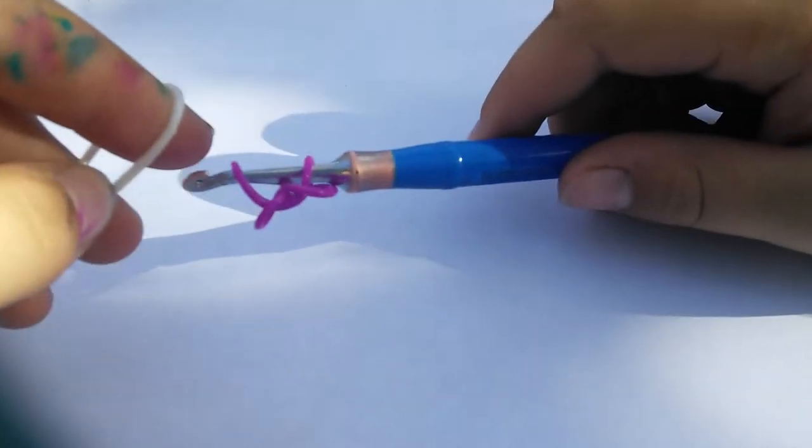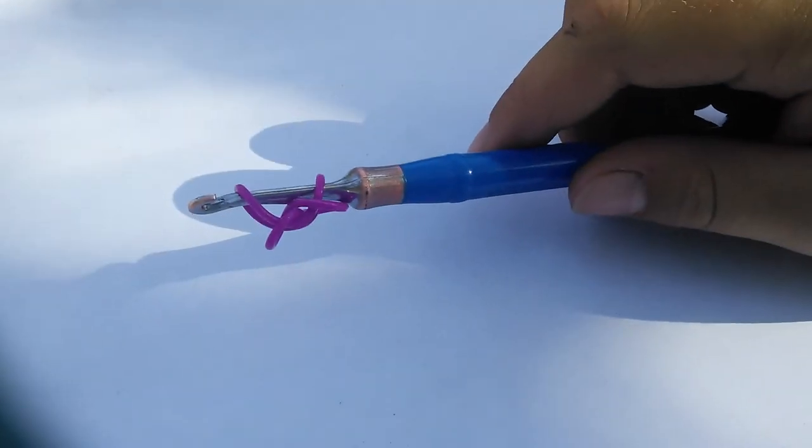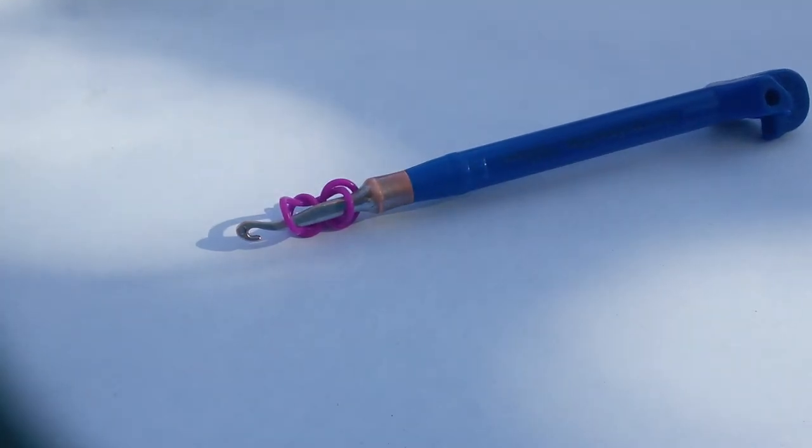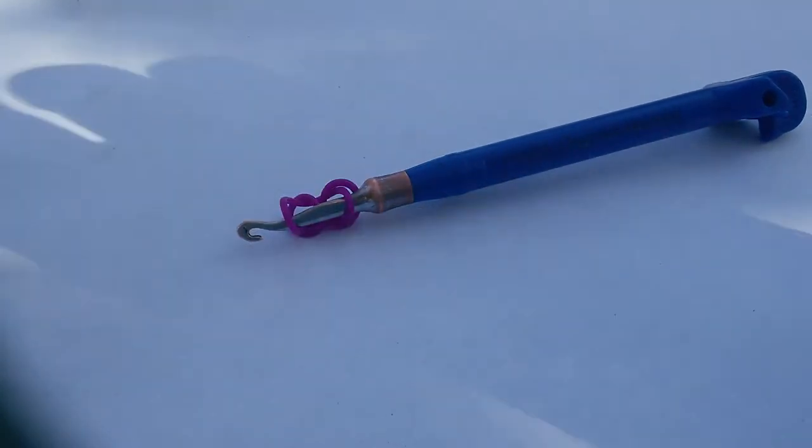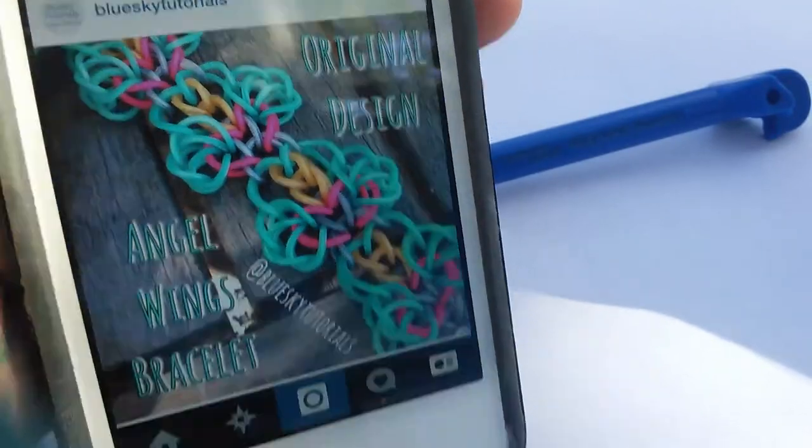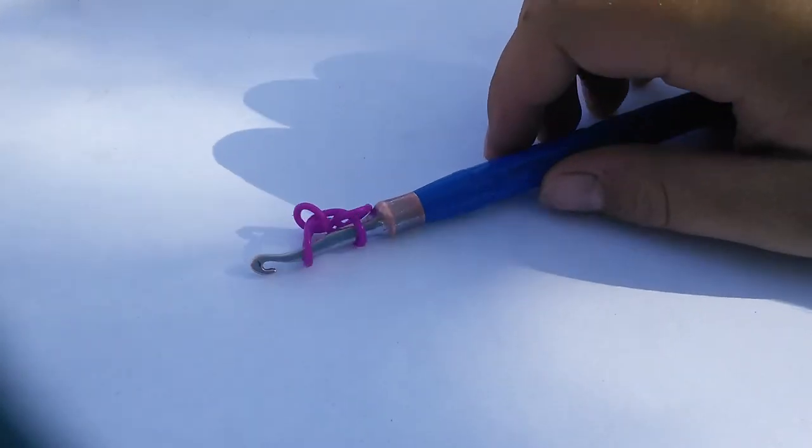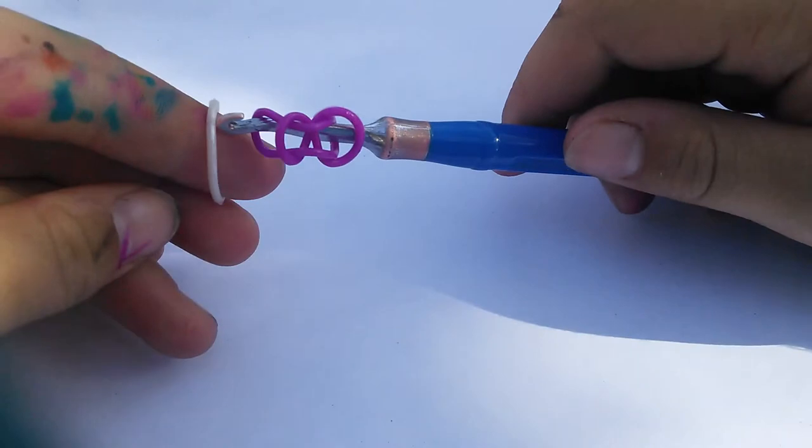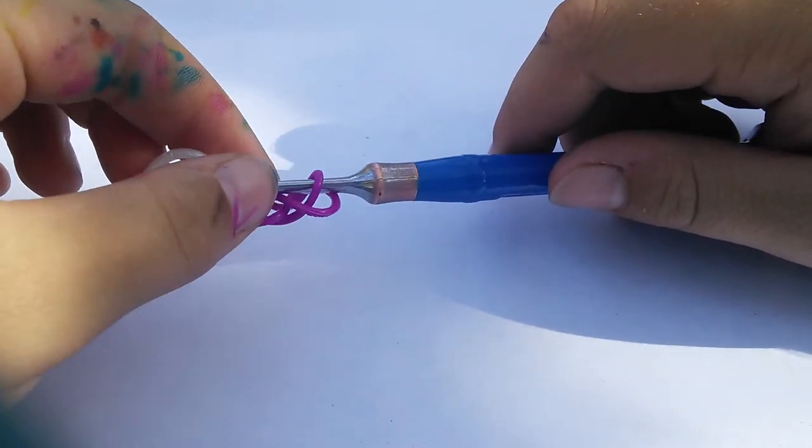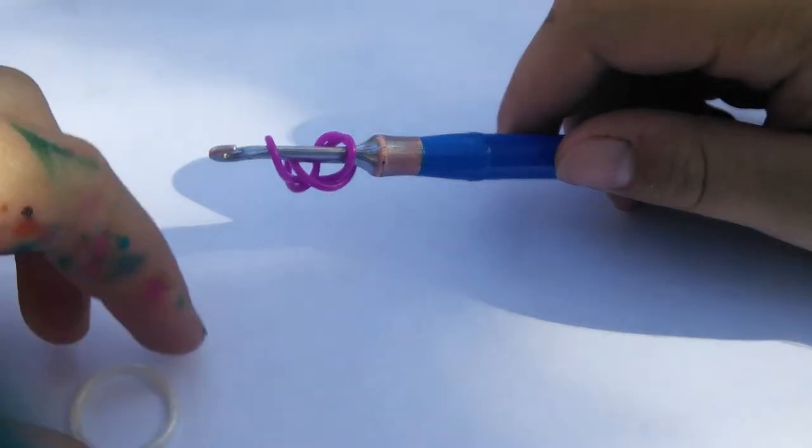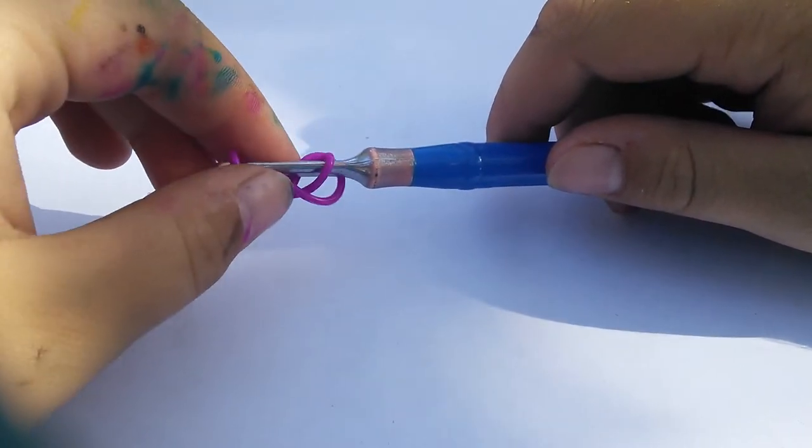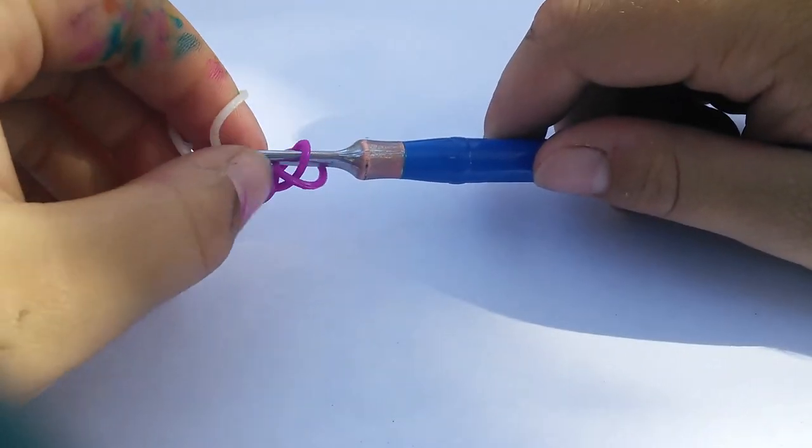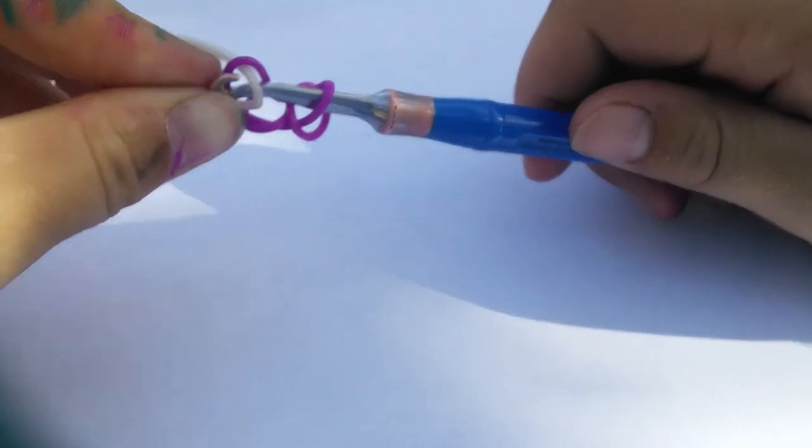Now you're going to take the color you're going to use for the actual wing part, and on mine, that would be the greenish color. These are the wings. And I'm going to be using white pearl today, and you're just going to loop this first purple link onto the white band, and then place the white band back on its hook.